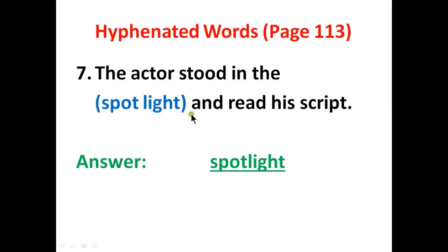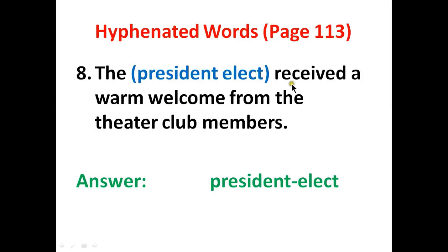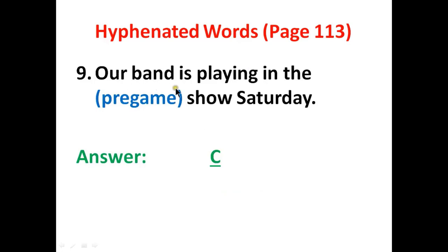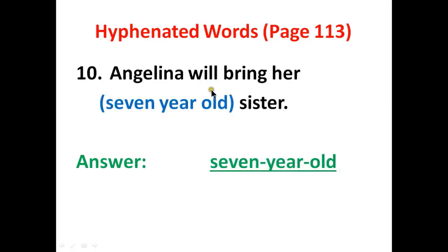Number seven: The actor stood in the spotlight and read his script. 'Spotlight' is a compound word — a combination of 'spot' and 'light' with no space. Number eight: The president-elect received a warm welcome from the theater club members — 'president-elect' will be hyphenated. Number nine: Our band is playing in the pre-game show Saturday. 'Pre-game' is already correct; there is no space and no missing hyphen. Number ten: Angelina will bring her seven-year-old sister. 'Seven-year-old' is a compound adjective for 'sister,' so all three words will be hyphenated.